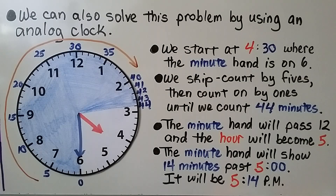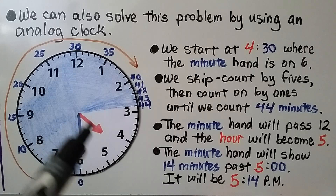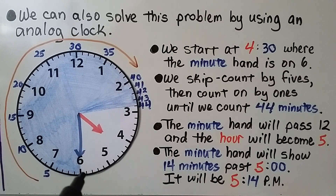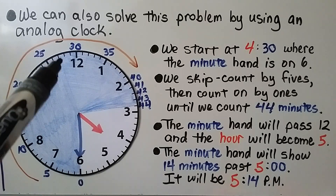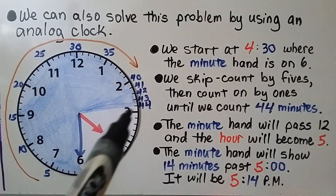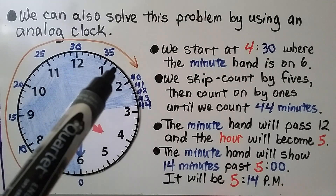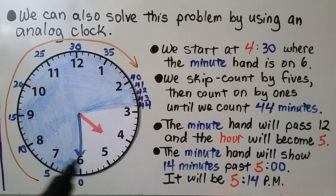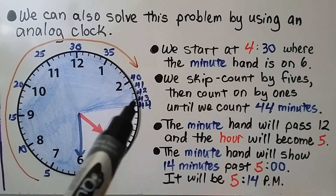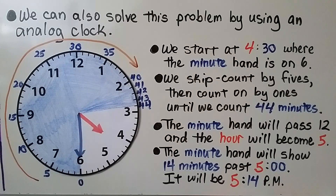We can also solve this problem using an analog clock. We start at 4:30. The hour hand is between the 4 and the 5, and the minute hand is on the 6. Where the minute hand is on the 6 is our zero mark for when we start skip counting. We skip count by fives to get to 40, then count on by ones to 44. The minute hand passes the 12, so the hour becomes 5, and the minute hand shows 14 minutes past — it will be 5:14 p.m.